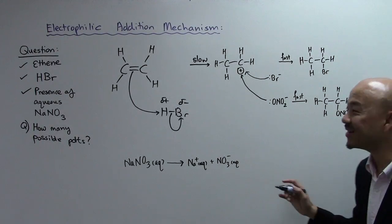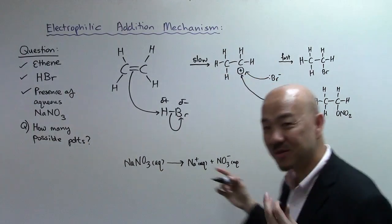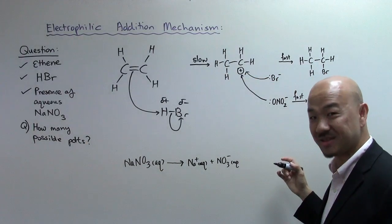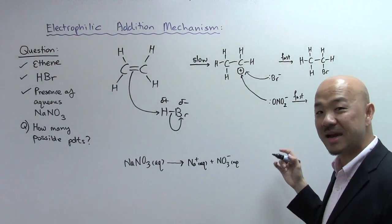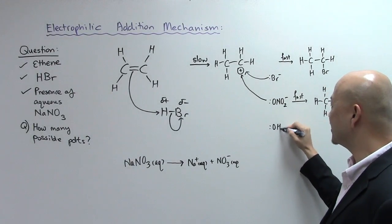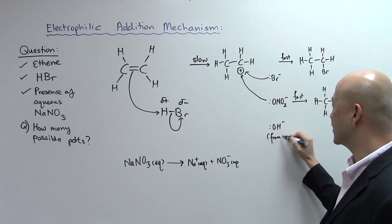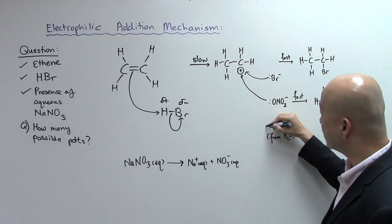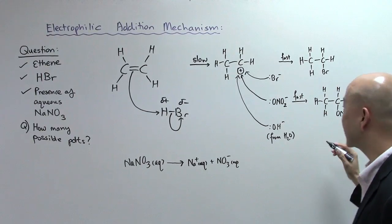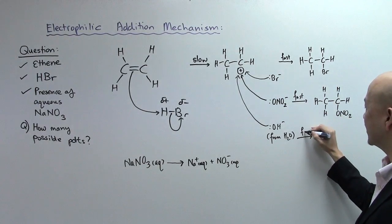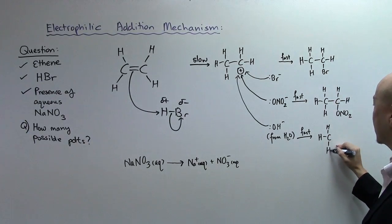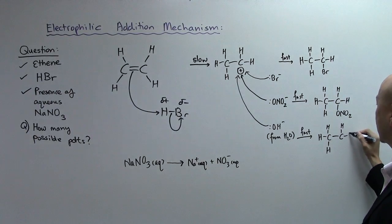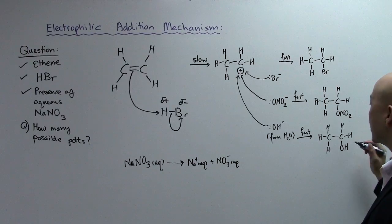Now, as a third product, if you realize that it's aqueous - now when it's aqueous it means what? It means that it's water. And water will dissociate partially to give you hydroxide ions. So your OH- from water will also attack this electron deficient carbon and you have the third product which is your ethanol.